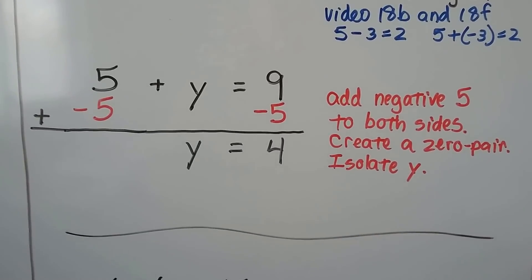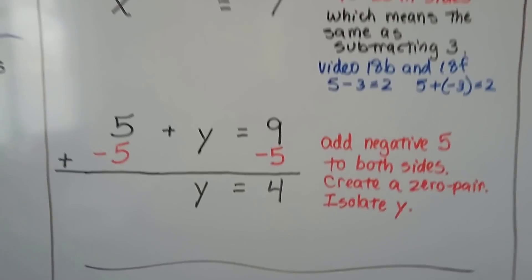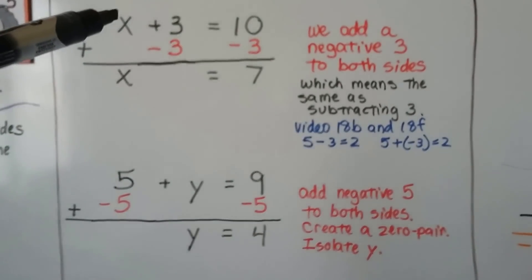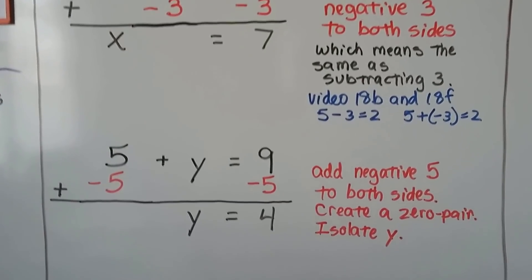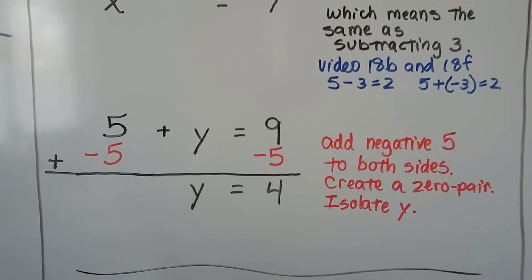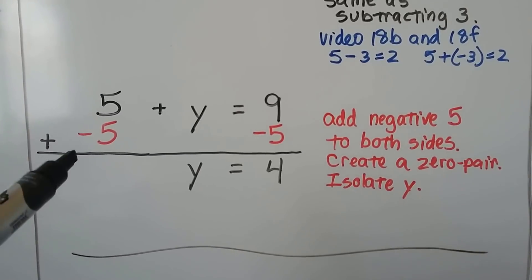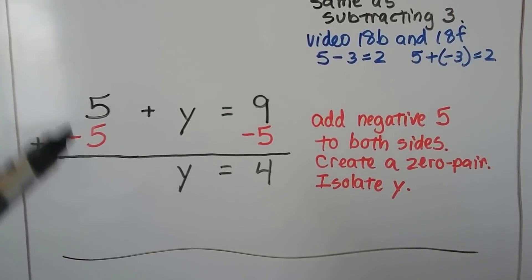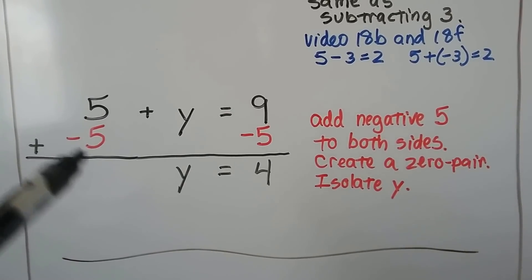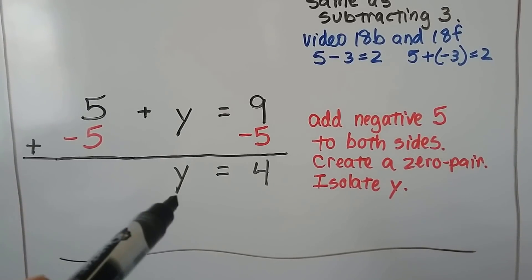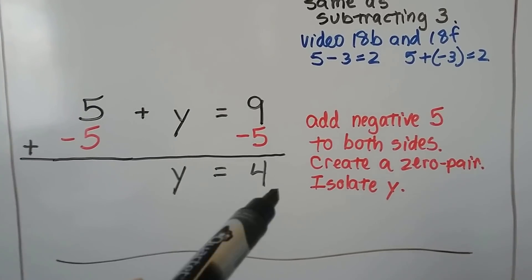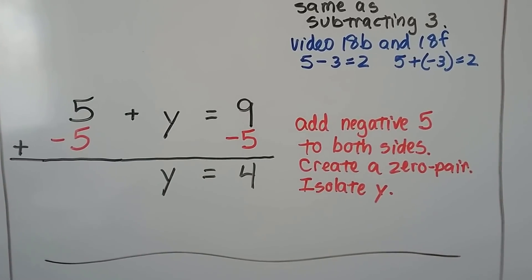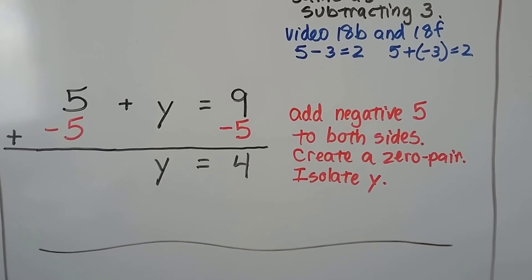For this one, we have 5 plus y equals 9. The variable is in the back here, but it's the same thing. We have a positive 5, so we're going to add a negative 5 to each side of the equation, create a zero pair here. That goes away, we drop down the y, and do our subtraction to get 4. We've isolated y to equal 4.